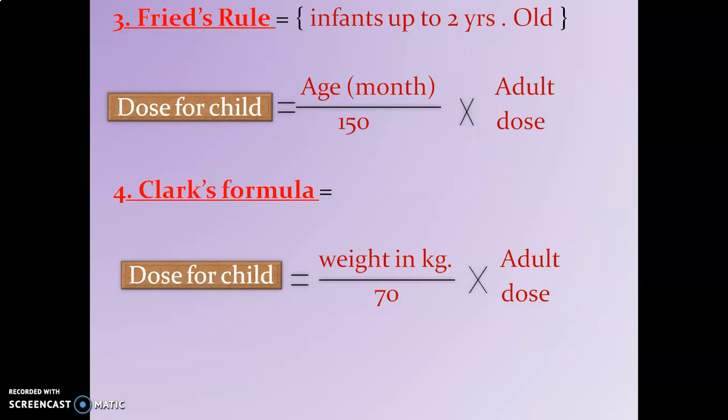Next is Fried's formula. When the age is given in months and the child is up to 2 years, the dose is calculated by Fried's formula: age in months divided by 150, multiplied by the adult dose. When age is given in months, use Fried's rule: age in months ÷ 150 × adult dose.